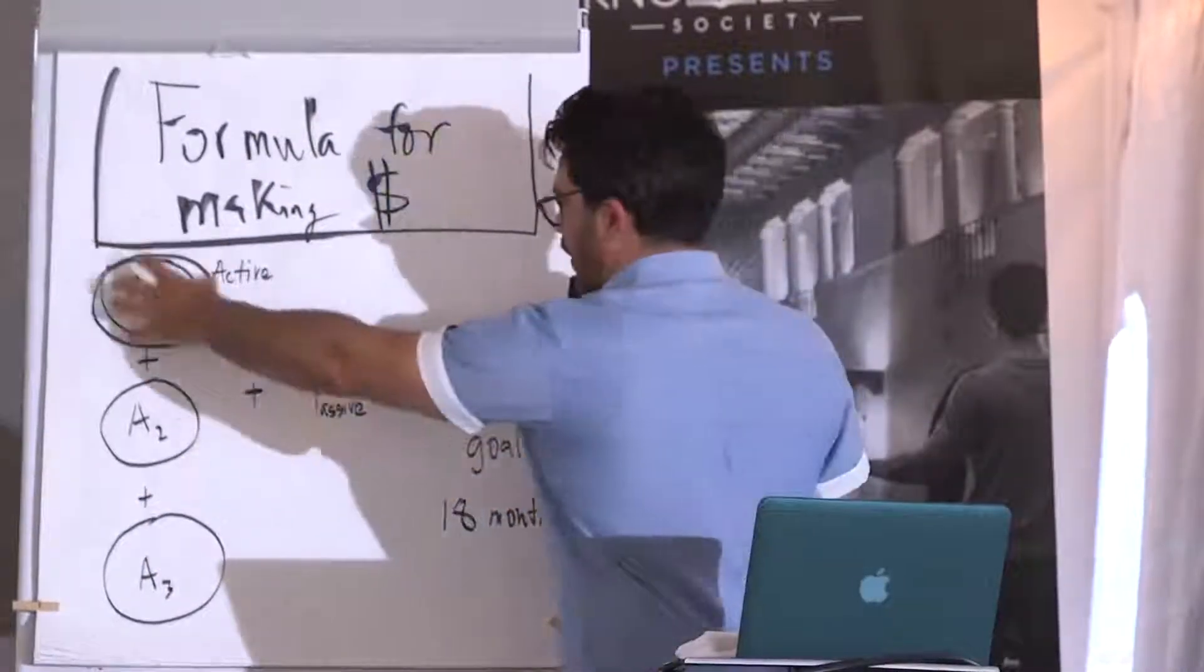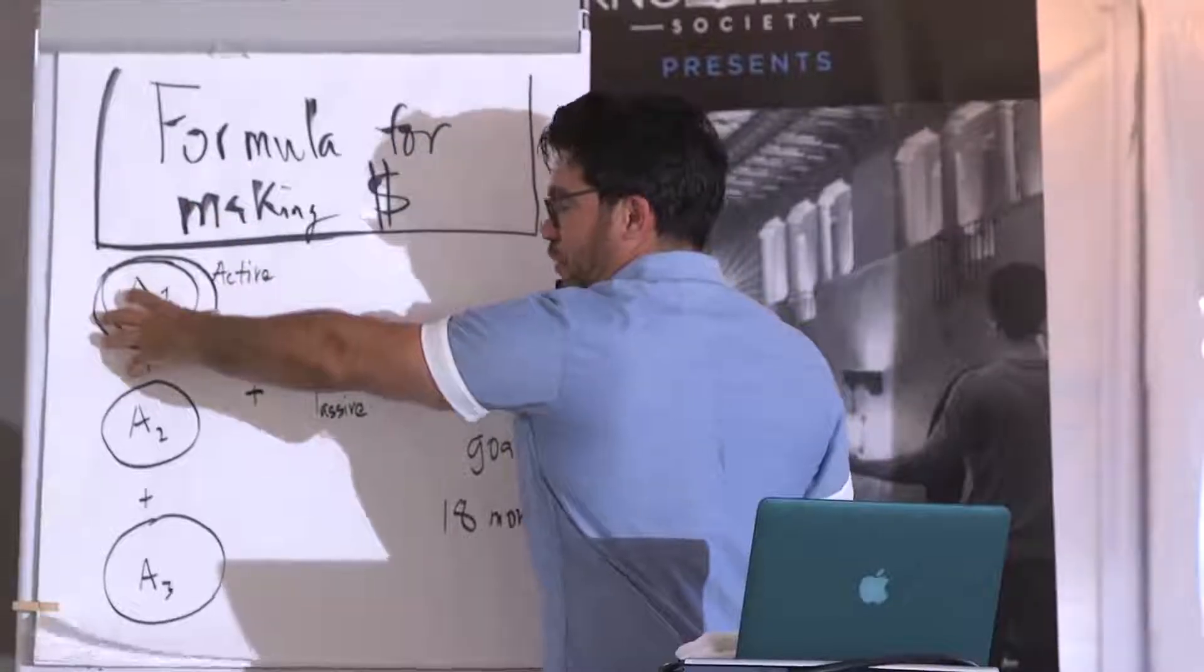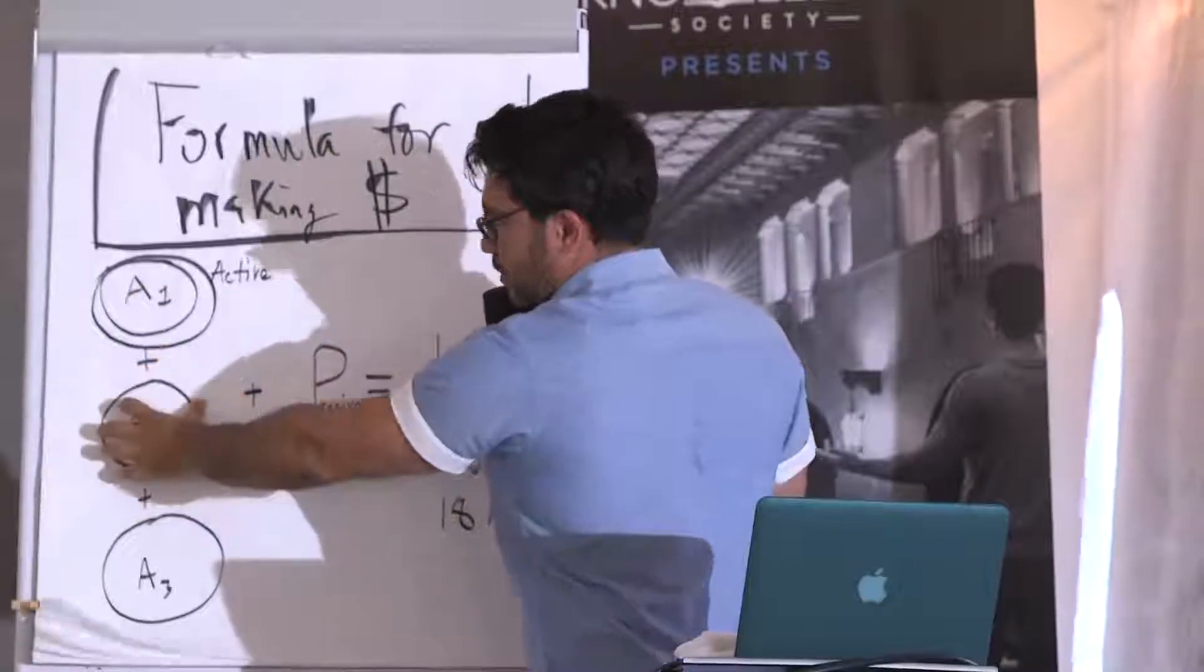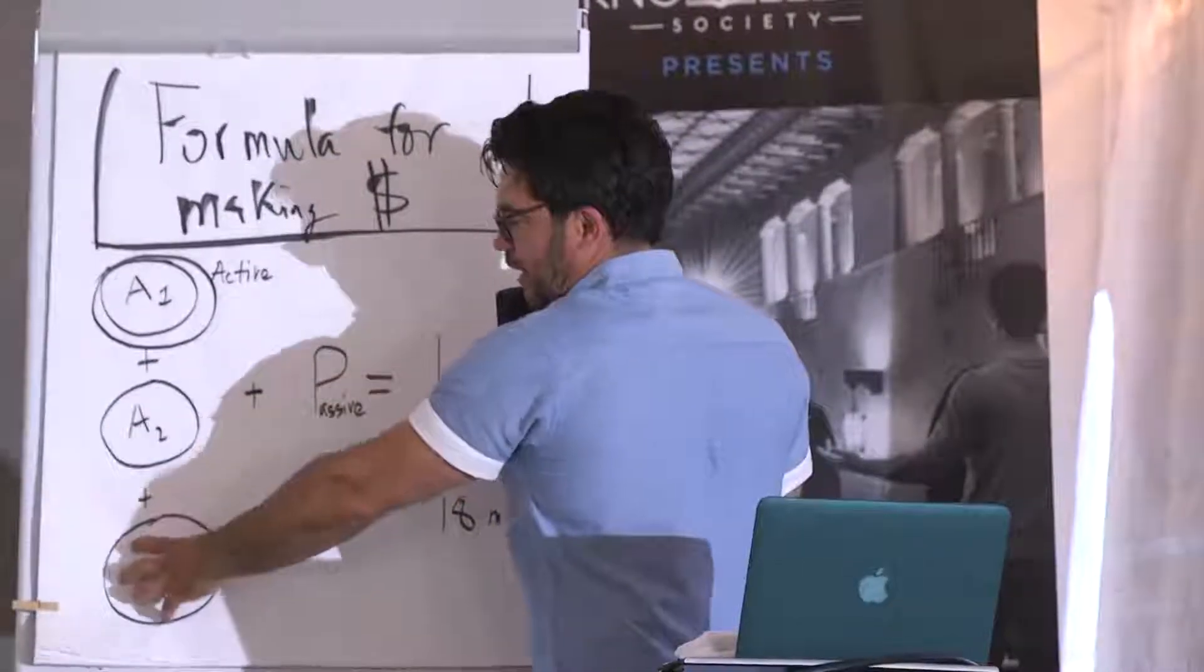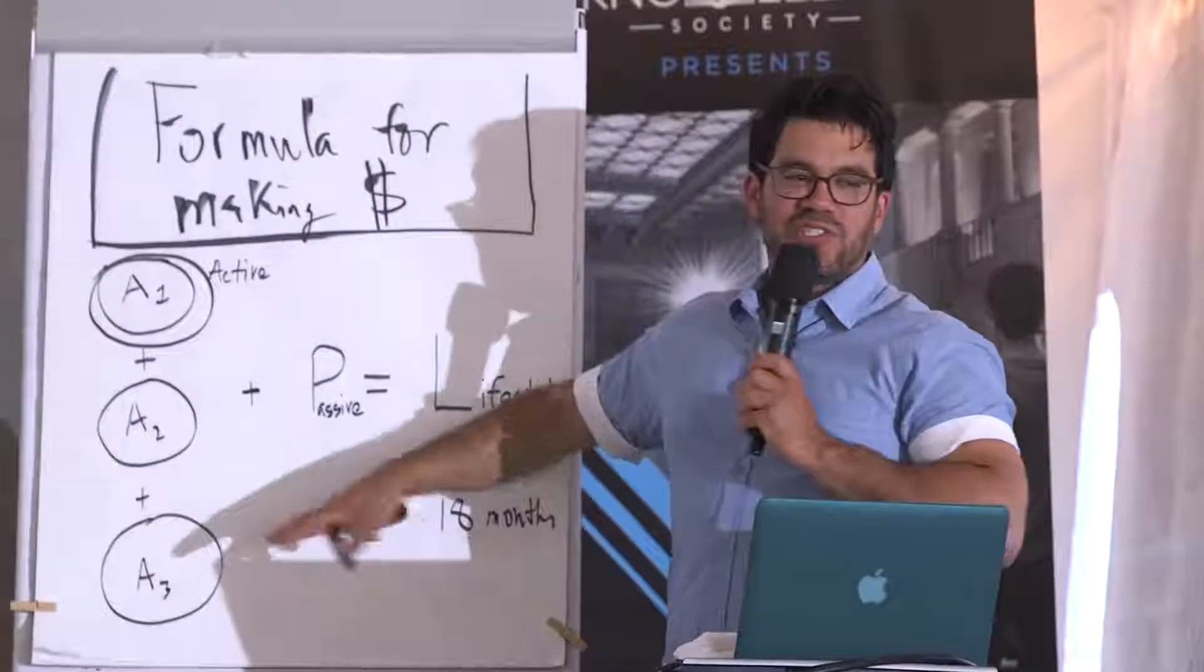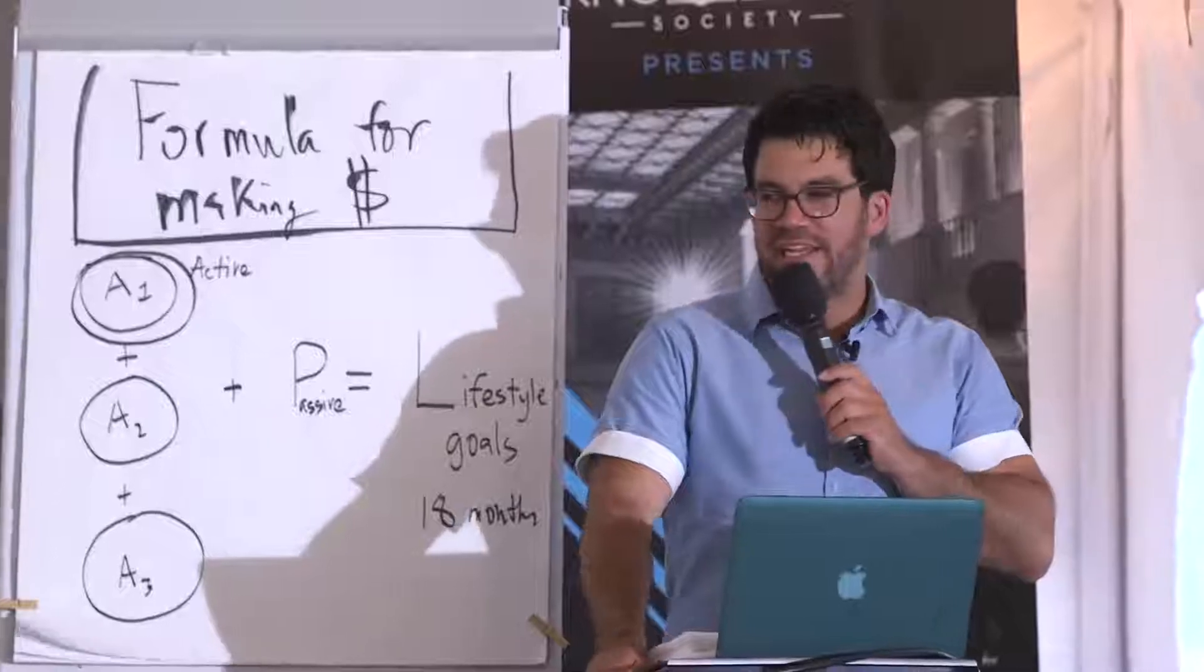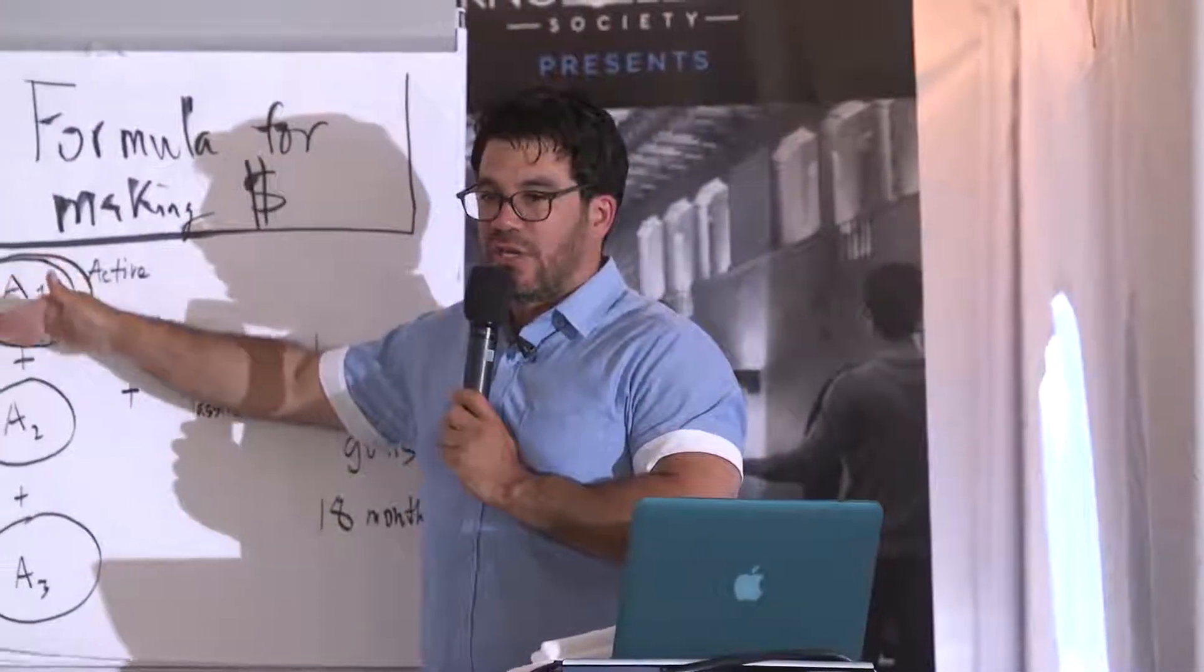So what I do, I get one up and going. I catch the rabbit. I run it for at least 18 months, make sure it's going. Then I'll hire somebody else to run it for me. And then I'll go and start A2. And then A3. How many A's does Warren Buffett have? I looked on his Wikipedia, he has like 99.